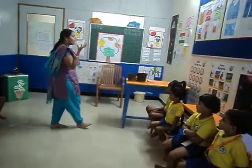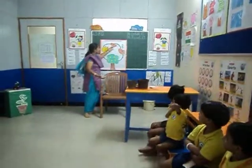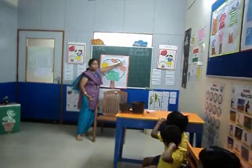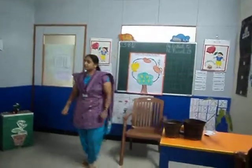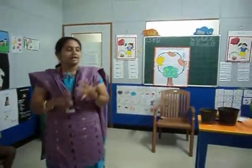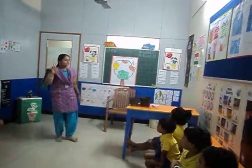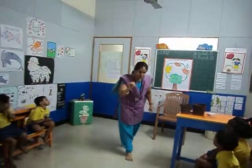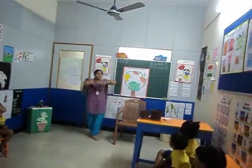Similarly, when you put mango seeds into the soil, what comes out? The plant comes out. How do you take care of the plant? We put soil, give water, and then give sunshine. When we give all three things — water, soil, and sunshine — the baby plant grows into a big tree.